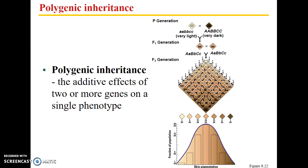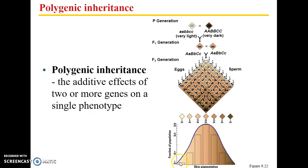Polygenic inheritance refers to the additive effects of two or more genes on a single phenotype. Skin color is a classic example: crossing someone with very light skin with someone with very dark skin produces an intermediate F1 generation. When those individuals reproduce across parental crosses, you see a huge range in skin tone depending on melanin in epidermal cells. The result is a bell curve where intermediate skin tone is most common, but very light and very dark skin still occur.